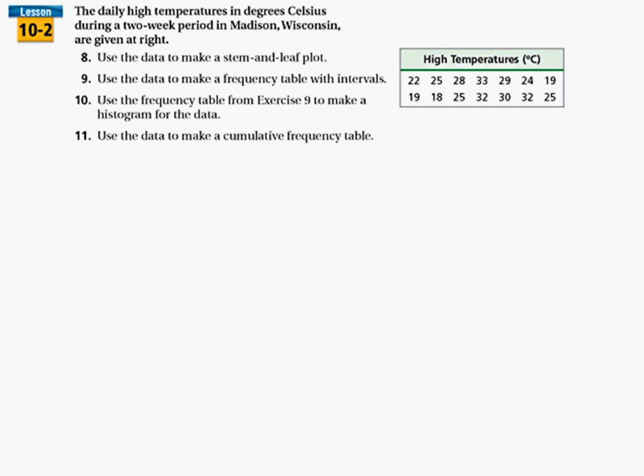A stem-and-leaf plot—the leaf is going to be the single digit: two, five, eight, three, nine, four, nine. And the stem is the other digit in the tens or hundreds. So here I have two, two, two—they'll all be one stem.